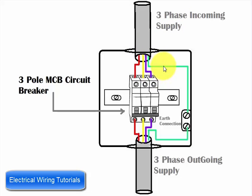The red wire is connected to this point, the yellow to this point, and the blue here. In the next step, we get the outgoing supply from the circuit breaker. First, we connect the outgoing red wire here, yellow here, and blue here.